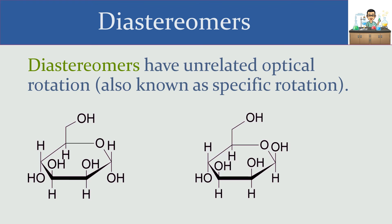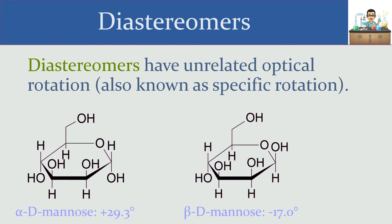Looking back at the two molecules we just saw, the molecule on the left is known as the alpha anomer and the one on the right is known as the beta anomer — both are forms of mannose. The specific rotation of alpha-D-mannose is +29.3 degrees, which is the reading you get from a polarimeter. The reading for beta-D-mannose is −17 degrees — totally unrelated to 29.3. The optical rotation of a molecule isn't something you can determine just by looking at a structure; it must be determined experimentally. In this case one value is positive and the other negative, but for any pair of epimers their values are completely unrelated — they could both be positive, both negative, or one of each — and the magnitudes are not predictable.